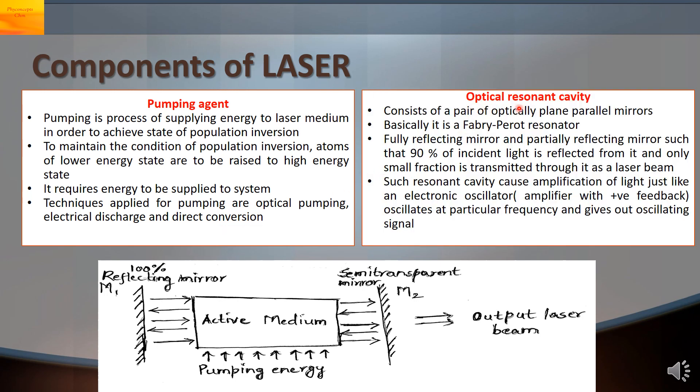Third component of laser is the optical resonant cavity. This consists of a pair of optically plain parallel mirrors shown as M1 and M2 which form a resonator called a Fabry-Perrot resonator. M1 is a 100% reflecting mirror and M2 is a semi-transparent mirror. It will be reflecting light but also transmitting some small fraction of light. These two mirrors form a resonator.